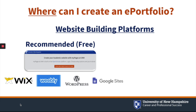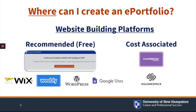Some platforms, like CarbonMade and Squarespace, require a monthly or annual commitment after a free trial. They offer personalized web domains, mobile app capabilities, and other customizable features. Before you pay anything, however, it's best to know your options and what you want your ePortfolio to include.